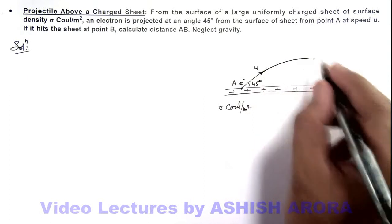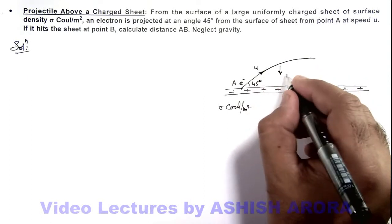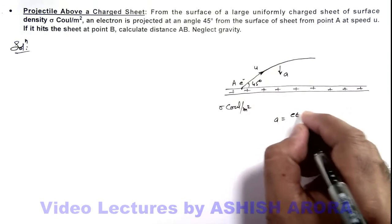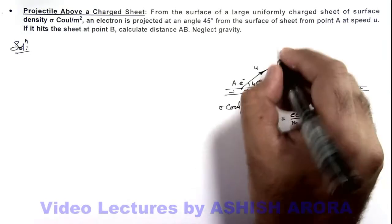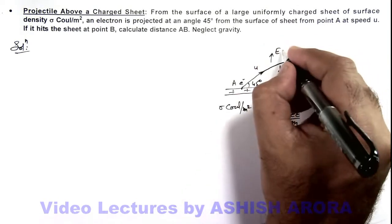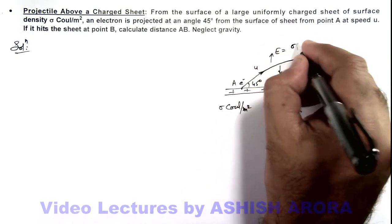In downward direction, its acceleration can be given as eE/m, where E is the electric field due to the sheet, which we know is given by sigma/2ε₀.